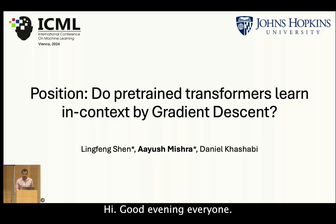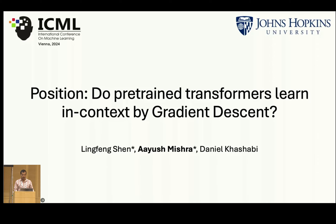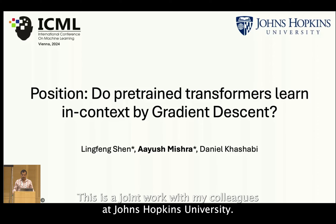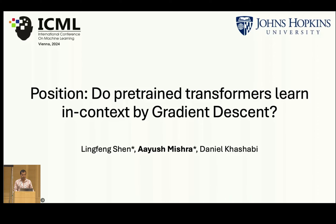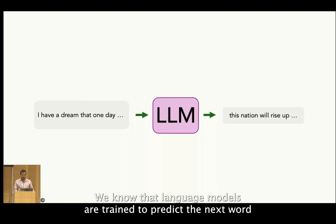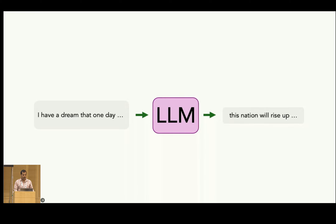Hi, good evening everyone. I'm Ayush Mishra and I'm here to present our alternate position to a growing line of work that equates in-context learning to gradient descent. This is a joint work with my colleagues at Johns Hopkins University. We know that language models are trained to predict the next word in natural language sequences and they do this job quite well.